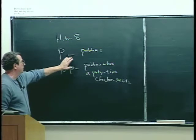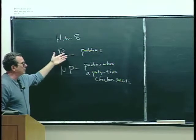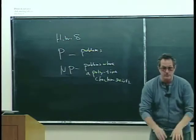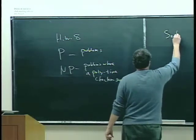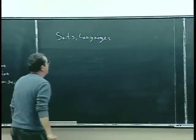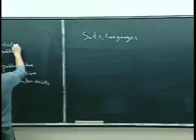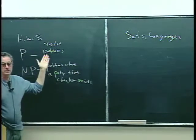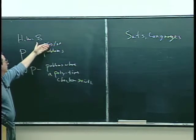So first of all, even P has to be modified, because the formal way that this whole theory of NP and NP-completeness was developed was in terms of sets, which are also called languages. And instead, these are yes-no problems, and so we think of the set of instances — we think of the set of instances where the answer to the problem is yes.